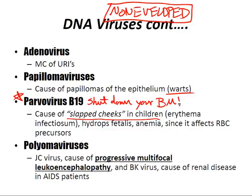The polyomavirus includes the JC virus — the cause of progressive multifocal leukoencephalopathy — and the BK virus. The BK virus is the cause of renal disease in AIDS patients.